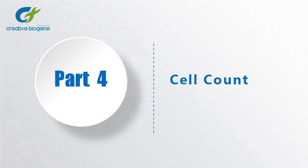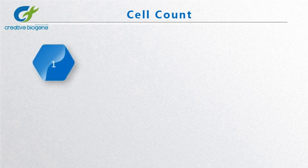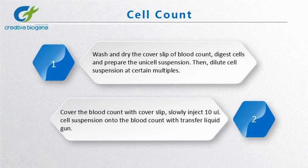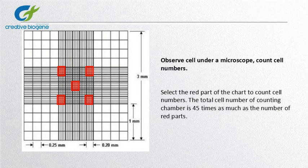Part 4: Cell Count. Firstly, wash and dry the cover slip of the hemocytometer. Digest cells and prepare the unicellular suspension. Then dilute the cell suspension at certain multiples. Next, cover the hemocytometer with the cover slip, and slowly inject 10 µL of cell suspension onto the hemocytometer with a transfer pipette. Observe cells under a microscope and count cell numbers as shown in the figure. Each counting chamber is divided into 9 parts; the middle square is divided into 25 small squares, and each small square is further divided into 16 smaller compartments. Select the red parts of the chart to count cell numbers. The total cell number of the counting chamber is 45 times the number of the red parts.